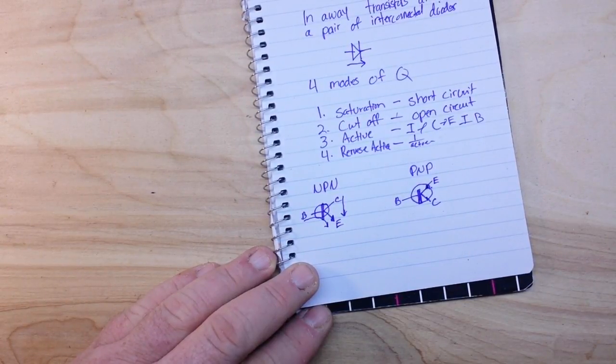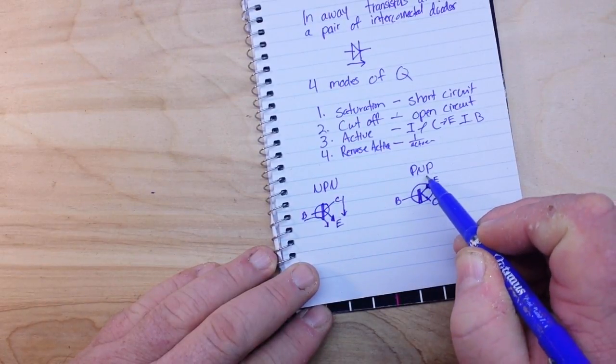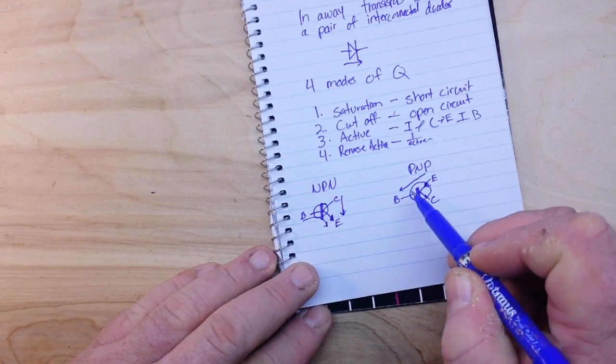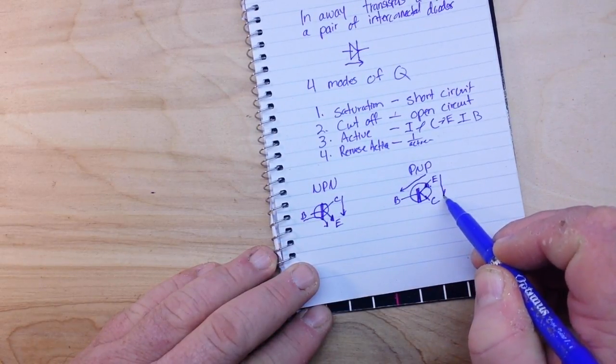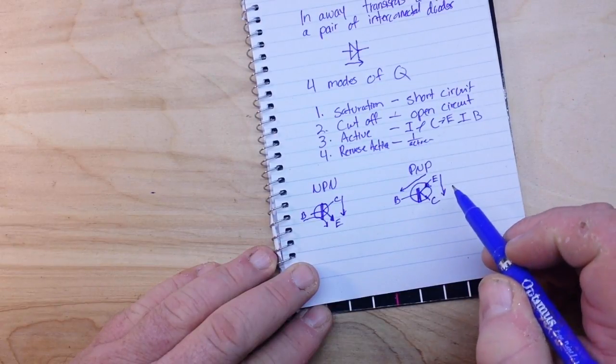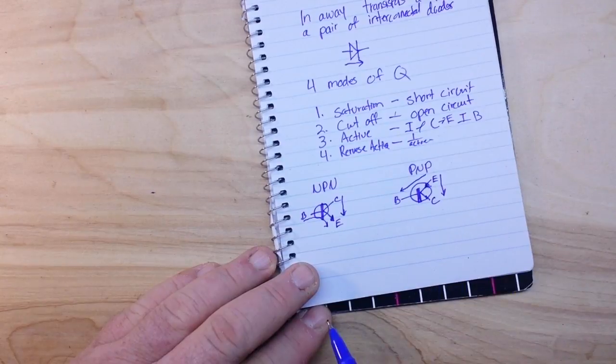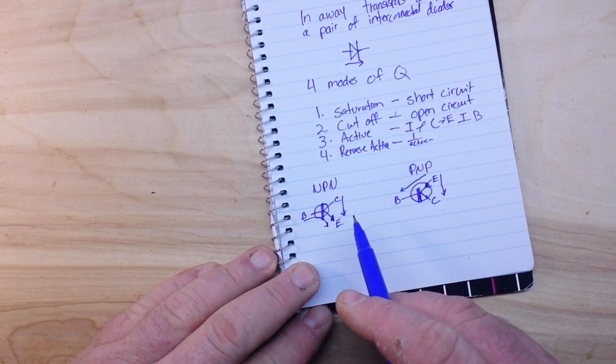When we're talking PNP transistors, a small current flows through the emitter-base junction in this direction, allowing a larger current to flow through the emitter-collector junction. And like I said, basically they are just the opposite of each other.